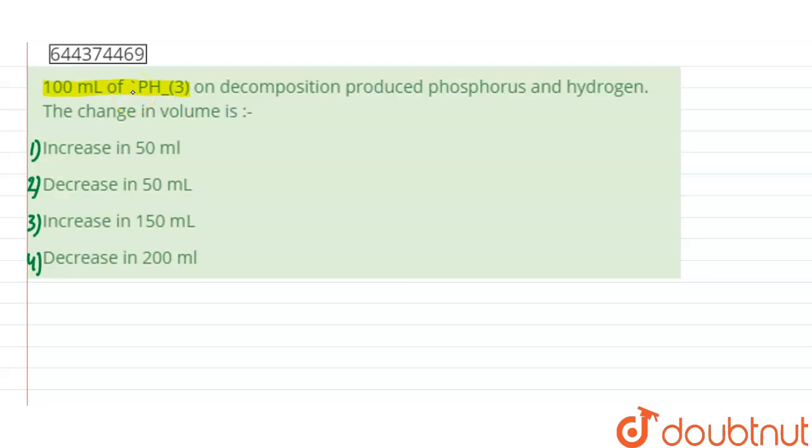says 100 mL of PH3 on decomposition produces phosphorus and hydrogen. The change in volume is... So we have to determine the change in volume after the product formation.